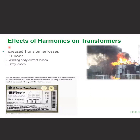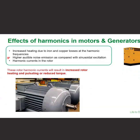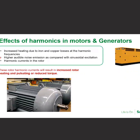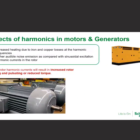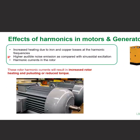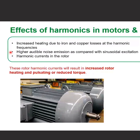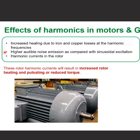Next is the effect of harmonics on your motors and generators. There is increased heating due to iron and copper losses at the harmonic frequencies. If your system is designed for 50 Hz but you are operating it at 250 Hz or 350 Hz and so on, then overheating will occur and will cause damage to your rotors. The same effect happens to rotors in terms of motors.